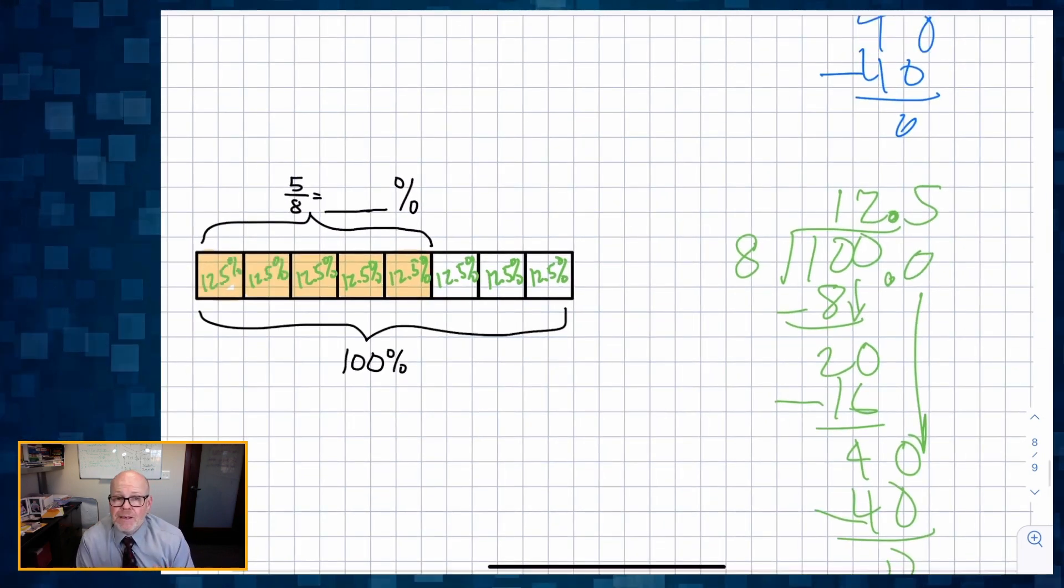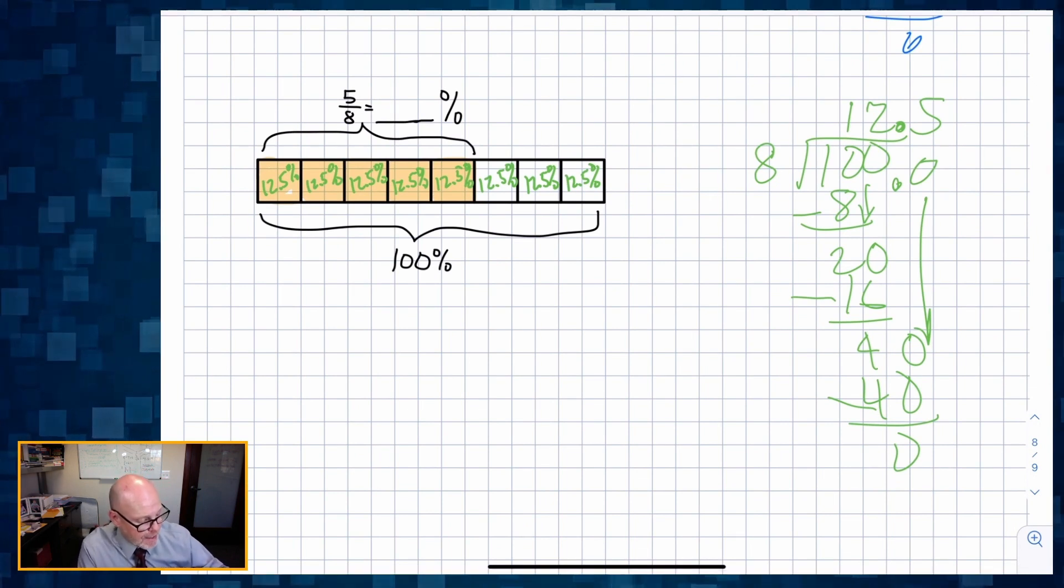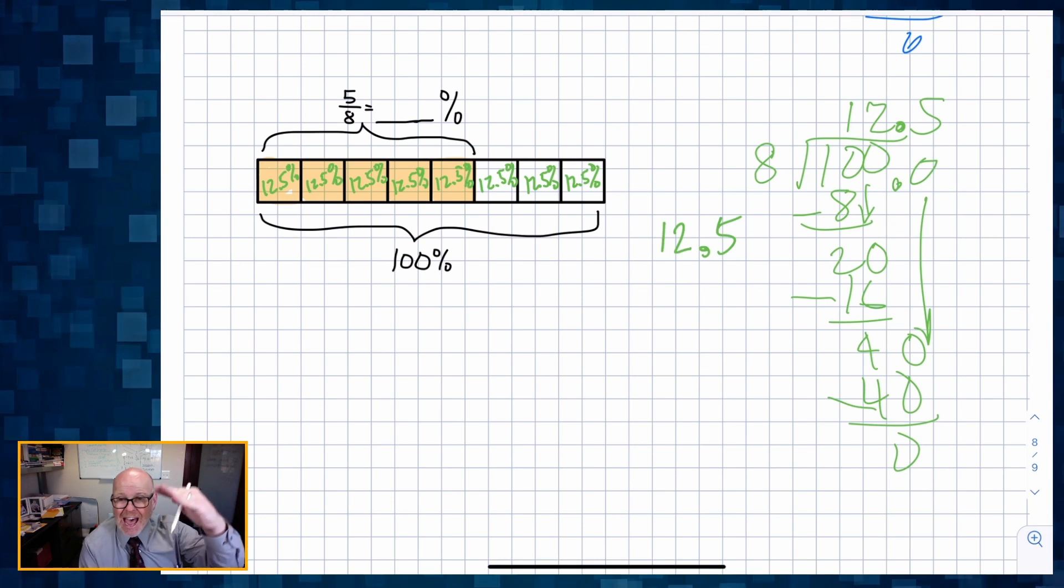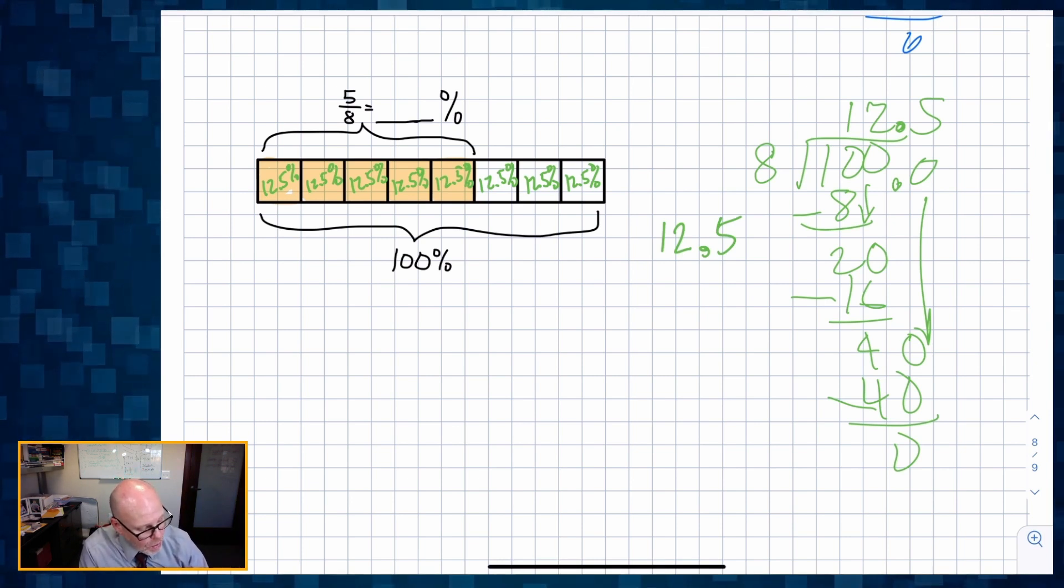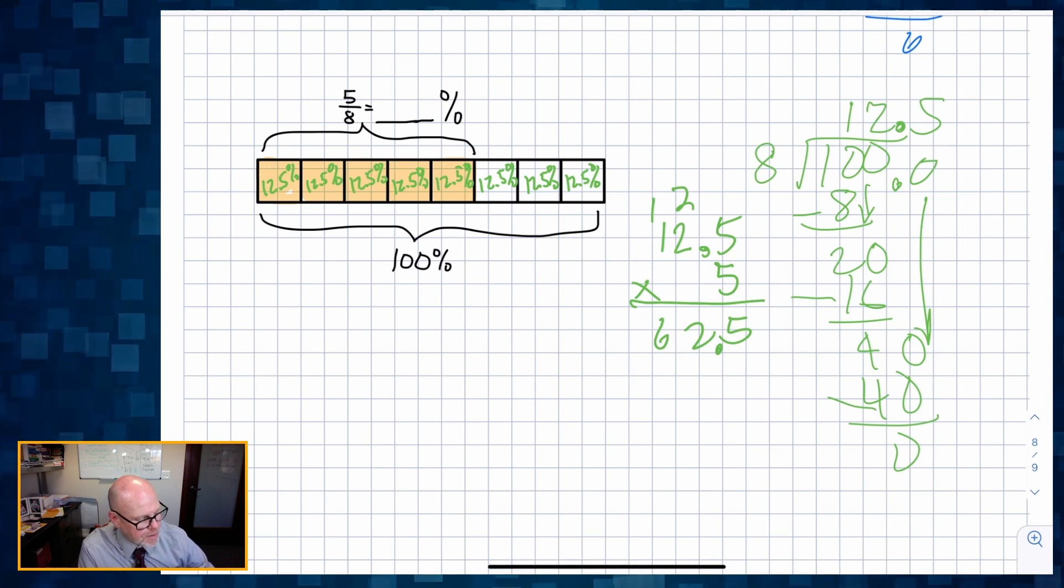So each piece represents 12 and a half percent. And then of course, what would the student do? Now the student would say, well but I want five of them. So I'm going to do that 12.5 and I might add them five times or I might multiply them by five. In which case, 12 times 5 is 60, carry, and I get 62.5 percent.